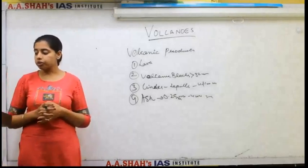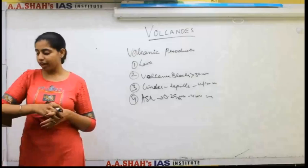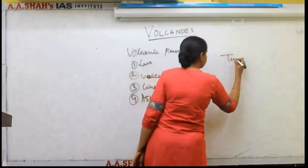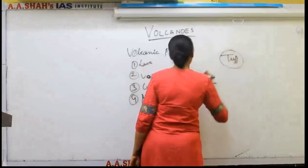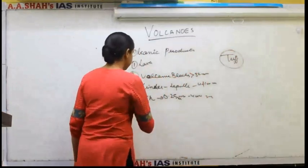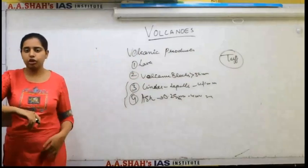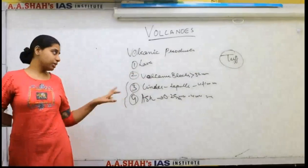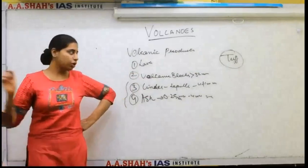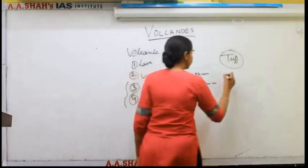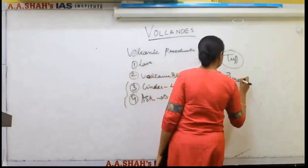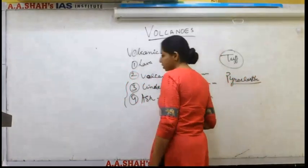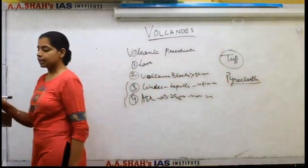If there is a rock formed of ash and fine ash, those types of rocks are known as tuff. A tuff is a rock formed of cinder, ash, or fine ash. All this material other than lava is also known as pyroclastic material — basically half-burnt material, not completely molten.